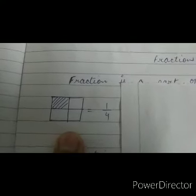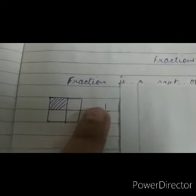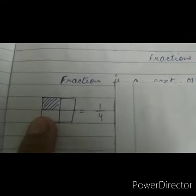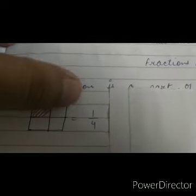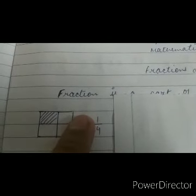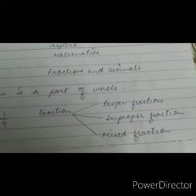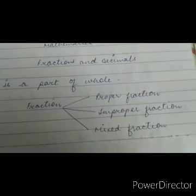If you see from this diagram and you have to write the fraction of the shaded region, first count the shaded parts — it is one, so we write one in the numerator. Now count the total parts: one, two, three, four. So the fraction is one upon four — one is the shaded part and four is the total.